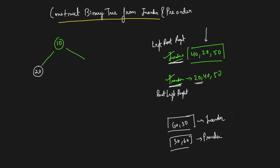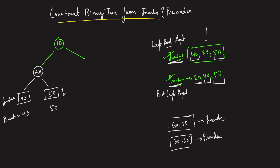In the in-order, 20 is the root. The left node is 40 — that's the left sub-tree's in-order — and there's one element, so the one element is also the pre-order traversal. For the right, anything to the right of 20 in the in-order is 50, and the corresponding pre-order for the right is also 50. The question is again broken down into two sub-parts where I again have an in-order and a pre-order for each side.